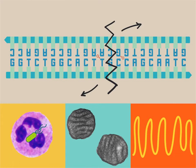Another cause of double-stranded breaks, which is interesting but not necessary to memorize, is due to type 2 topoisomerase. Type 2 topoisomerase purposely cuts both DNA strands in order to untangle DNA supercoils, but may fail to repair this break. As a side note, the chemotherapeutic agent etoposide is designed to take advantage of this natural process and to prevent type 2 topoisomerase from repairing the breaks that it causes, thus resulting in the death of rapidly dividing cells.